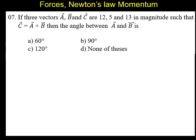If three vectors A, B and C are 12, 5 and 13 in magnitude such that C is equal to A plus B, then the angle between A and B is.